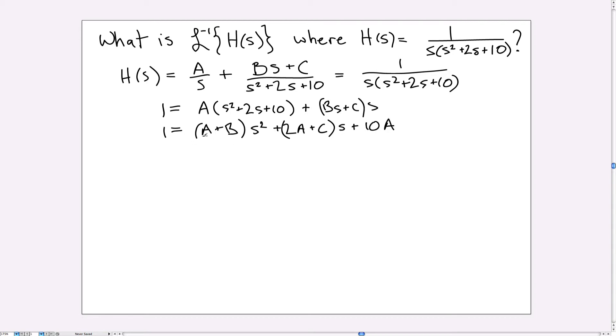So what we need to do now is match the coefficients. You'll notice there's only a constant term on this side, so that means that A must be equal to one-tenth, because this term here is the only one that is constant as a function of S. And then we also know that A plus B is equal to zero, and that 2A plus C is equal to zero as well. So that means that B is equal to minus one over ten, and C is equal to minus 2A, which is minus one over five.